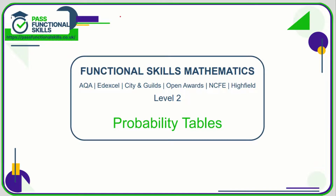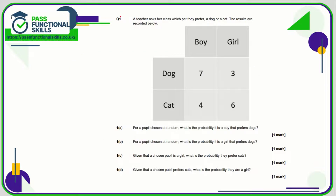Let's take a look at the probability tables questions. Question one: for a pupil chosen at random, what is the probability it is a boy that prefers dogs? First, we need to find how many pupils there are in total. There are seven plus three — ten — plus four plus six — ten. So in total there are 20. Out of 20, how many are boys that prefer dogs? That is seven out of twenty.